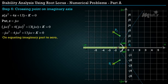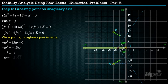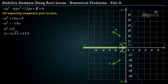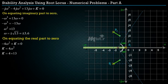Equating the imaginary part to zero gives ω = ±√13 = ±3.6. From the characteristic equation, equating the real part to zero gives −4ω² + K = 0. Substituting ω² = 13, we get the gain K = 52.